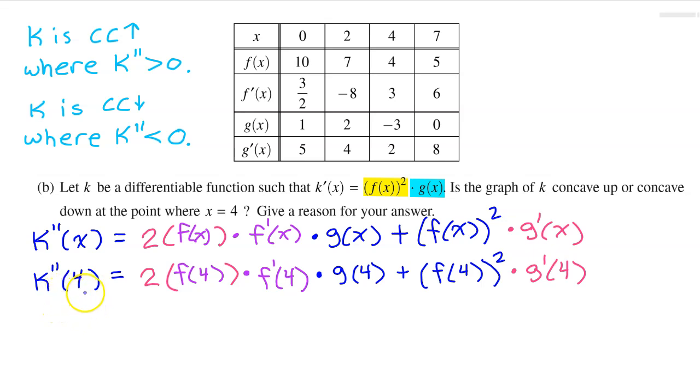We can find k double prime at 4 by plugging in 4 for all of these x's. Now let's go ahead and evaluate using the table. So we have 2 times f at 4. And then let's see, f at 4 is 4. So we have 2 times 4. And then we have times f prime at 4. f prime at 4 is 3. And then we have times g at 4. g at 4 is negative 3.